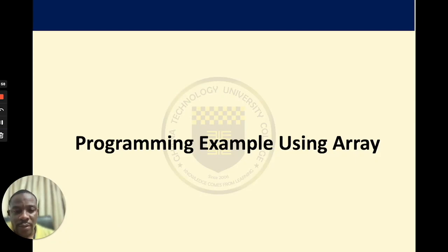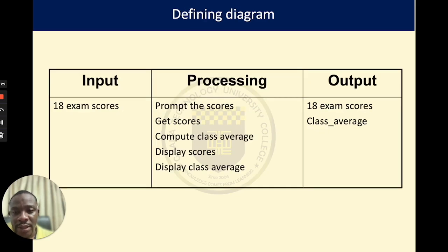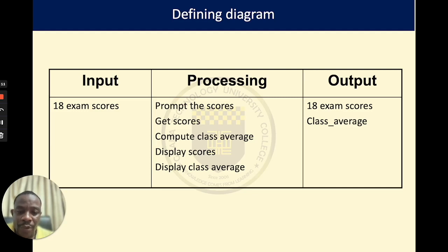Now let's look at some examples using arrays. In this example, we are required to design a program that will prompt for and receive 18 examination scores from a mathematics test, compute the class average, and display all the scores and the class average to the screen. When given an example like this, the first thing you do is design your summary table. The input will be 18 exam scores; the output will be the 18 exam scores and the class average. We are required to: prompt the scores, get the scores, compute the class average, display the scores, and display the class average.